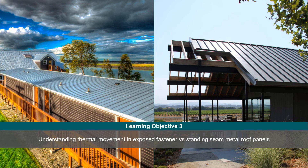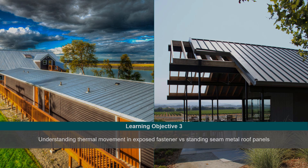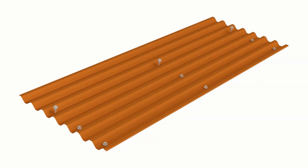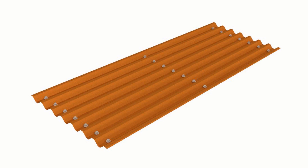In the third learning objective, we cover thermal movement in exposed fastener versus standing seam metal roof panels. Metal roofing expands when heated and contracts when cooled. By attaching a panel with exposed fasteners, you create a fixed point at every fastener location. Exposed fastener panels were not designed to accommodate thermal movement. Over time, the panels will continually push and pull at fastener locations until one gives — typically the panels, as their tensile strength and thickness are not equal to that of the fastener. The holes where fasteners are driven through will elongate over time, which is the number one cause of roof leaks with exposed fastener panels.